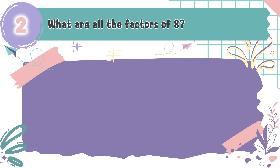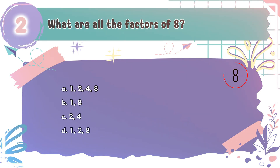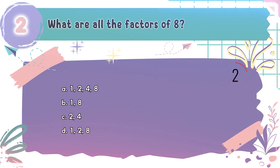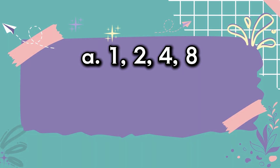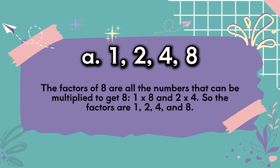Question number 2: What are all the factors of 8? The choices are A: 1, 2, 4, 8; B: 1, 8; C: 2, 4; D: 1, 2, 8. The correct answer is A: 1, 2, 4, 8. The factors of 8 are all the numbers that can be multiplied to get 8 — 1 times 8 and 2 times 4 — so the factors are 1, 2, 4, and 8.